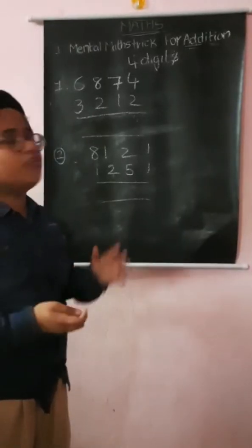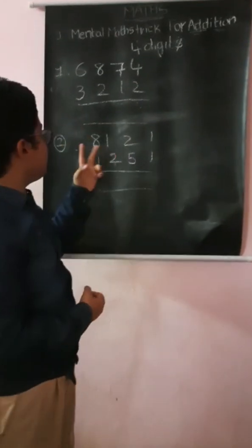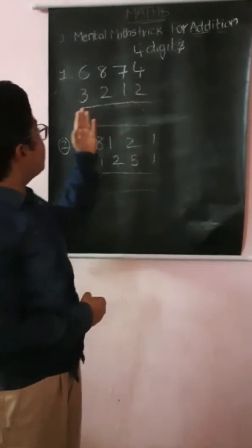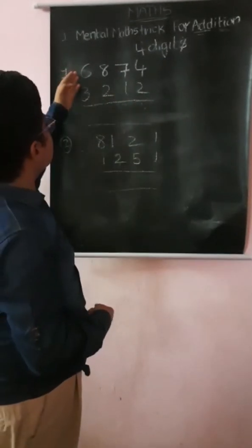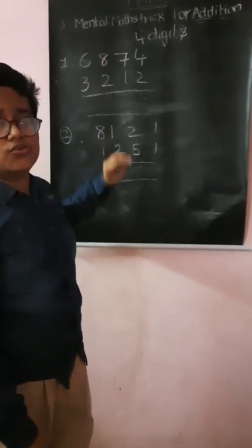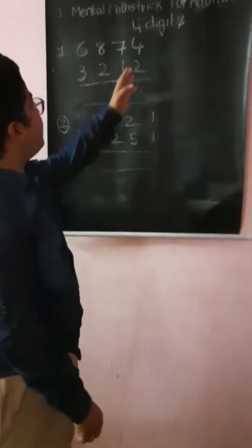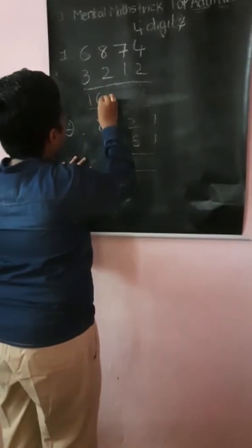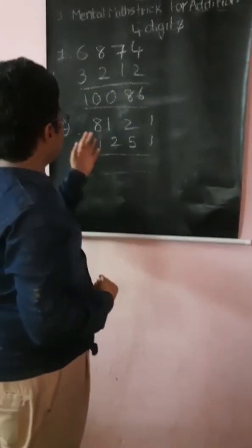We can continue this method with 4 digits, 5 digits, and 6 digits. Here are some examples for 4 digits: 6874 plus 3212. Now 6000 plus 3000 is 9000. 800 plus 200 is 1000. And 70 plus 10 is 80. And 4 plus 2 is 6. The answer is 10086.